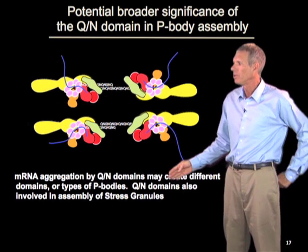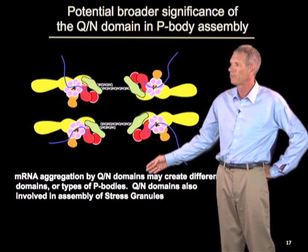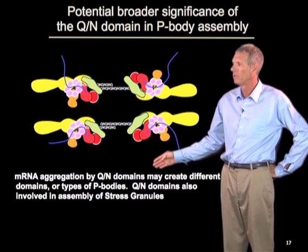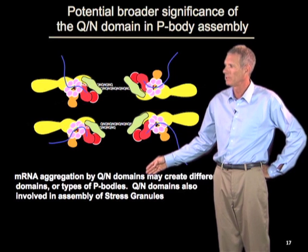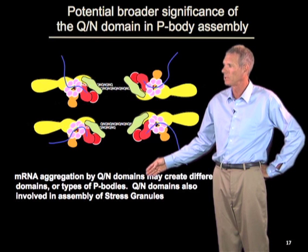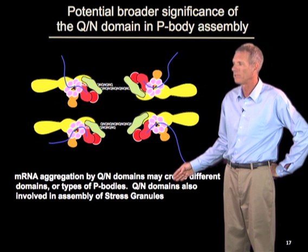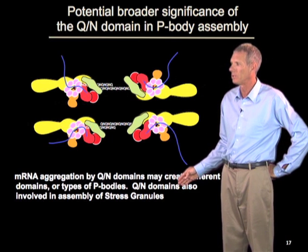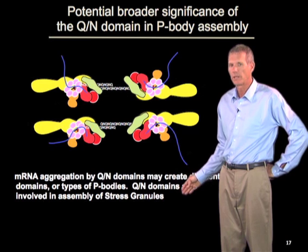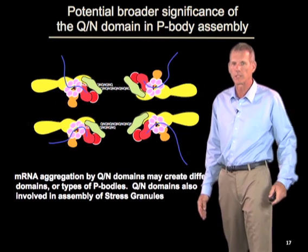Different types of these domains may create different types of structures or different types of p-bodies. It is not well understood how specific these different QN domains can be, but in some cases they appear to have specific interactions with each other. Different QN domains could drive different types of RNA protein granules. Consistent with that, we also know that QN domains are involved in the assembly of another RNA protein granule found in yeast and human cells called a stress granule, which I will discuss in a few minutes.